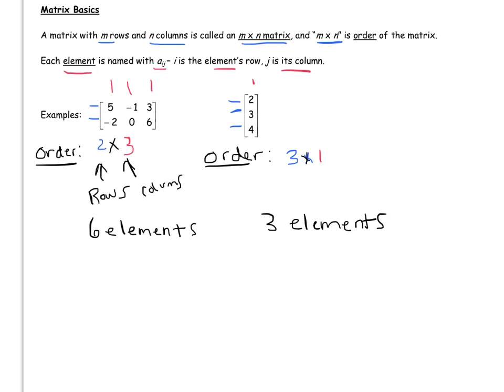So for example, in the first matrix here, if I ask you what is element A sub 1, 2, well, that is the element in the first row and the second column. So the first row and the second column, if you look at it, here's the first row, there's the second column. It's pointing to negative 1.